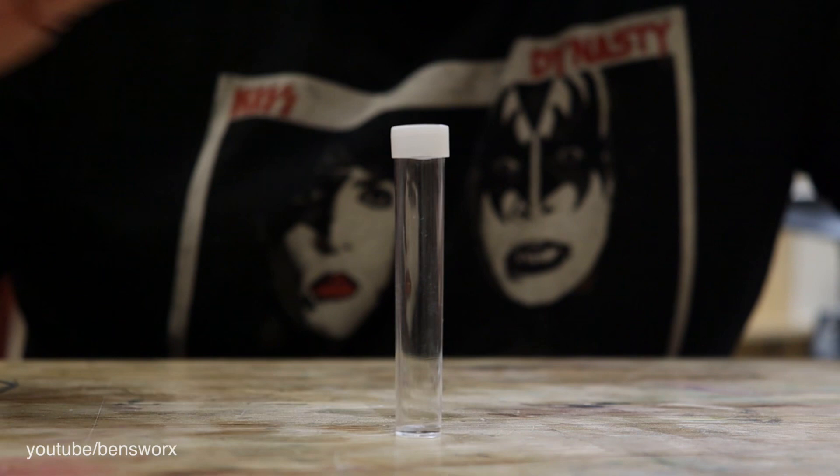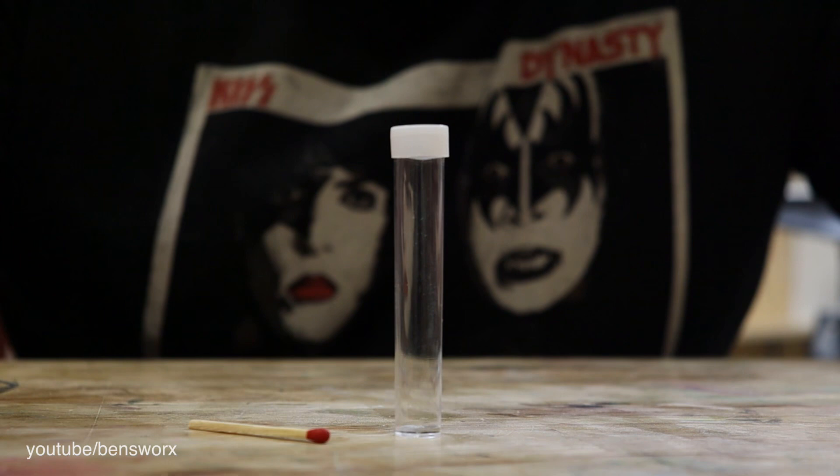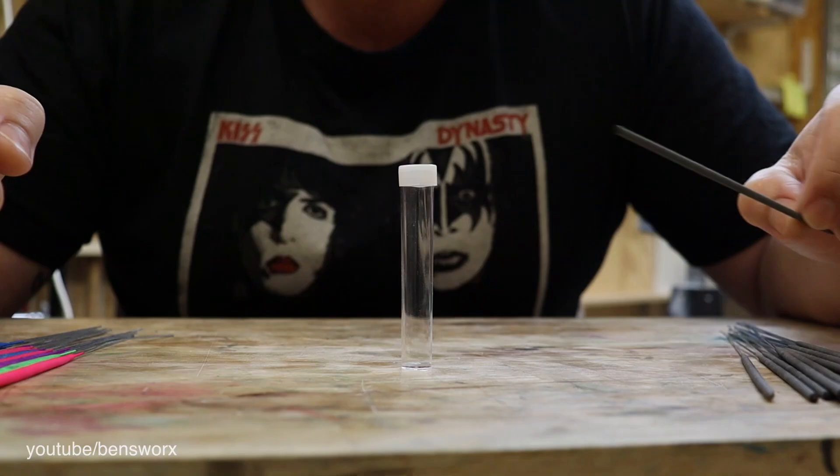So making these blanks are going to be super easy. I'm going to take the container that we used from last week and I'm just going to glue a match straight in the bottom. Once I've done that, I'll fill it with resin and then we'll have our first blank.